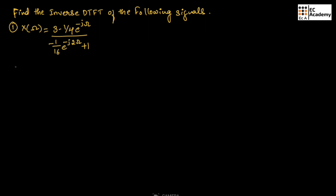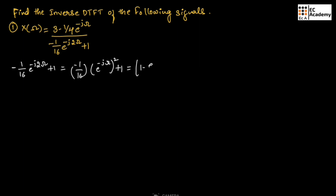First, let us consider the denominator part, which is minus 1/16 · e^(−j2ω) plus 1. We can write this as minus 1/16 · (e^(−jω))² plus 1, which factors as (1 − e^(−jω)/4)(1 + e^(−jω)/4). If we multiply these two terms, we will get this equation.